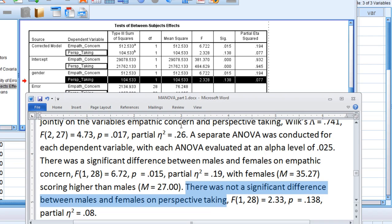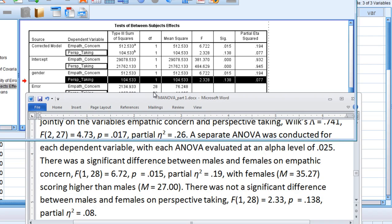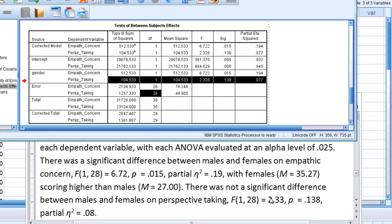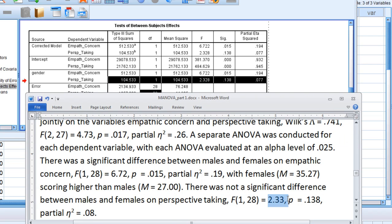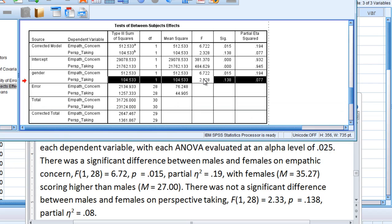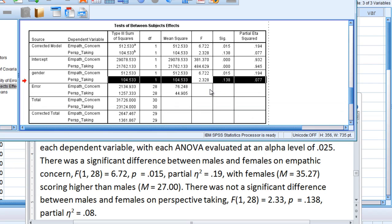F of 1 and 28 - that's the 1 and then 28 for error, which is right there - equals 2.33, which you see right here under F. And then P is 0.138, partial eta-squared of 0.08. That's right there, the partial eta-squared.